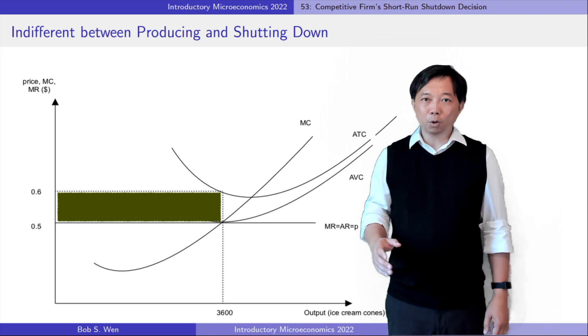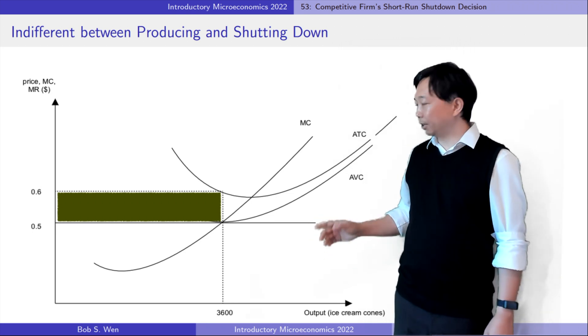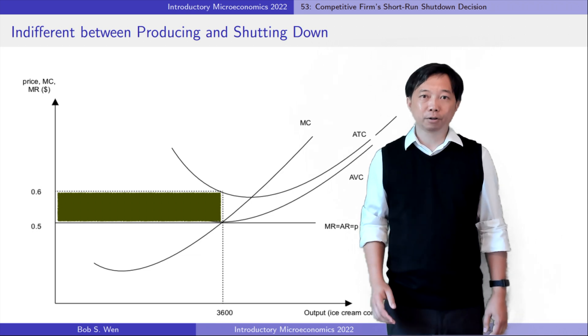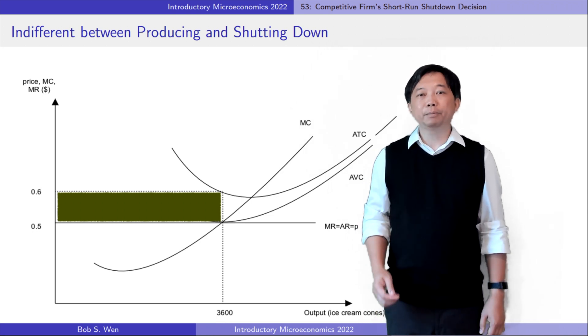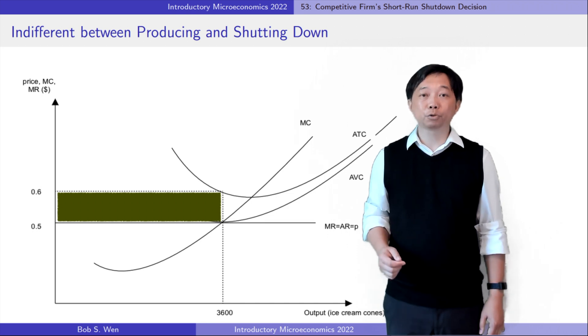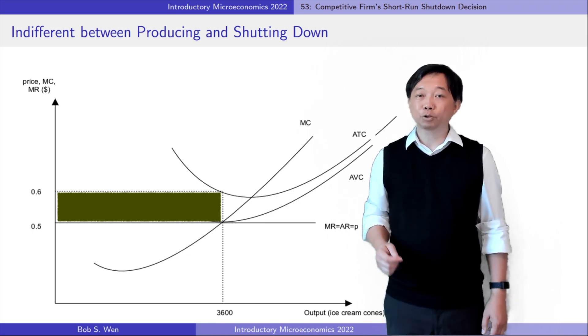This is the case where the firm operates at the minimum average variable cost. The ice cream firm is indifferent between producing the optimal level of 3600 ice cream cones or shutting down temporarily.